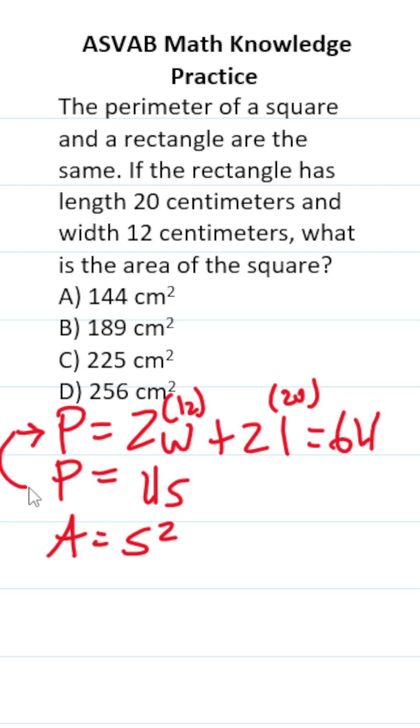According to the problem, these perimeters are the same, so this becomes 64 = 4s. Divide both sides by 4. This crosses out, leaving s = 64/4, which is 16.